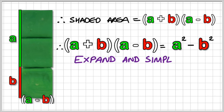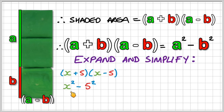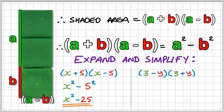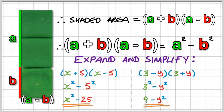Now let's quickly do some examples. We have the expression X plus 5 times X minus 5. This follows the same format as A plus B times A minus B. So the difference of the two squares should be X squared minus 5 squared, which simplifies to X squared minus 25, because 5 squared is 25. Let's do another one. We've got 3 minus Y and 3 plus Y. It doesn't matter whether the brackets are switched around — it's still the difference of two squares. So we have A squared, which is 3 squared, minus B squared, which is Y squared — giving us 9 minus Y squared.